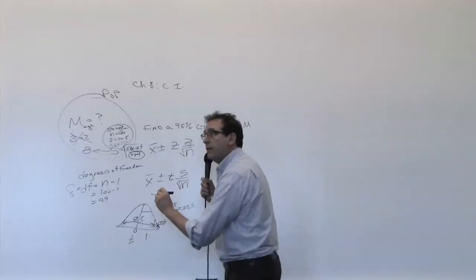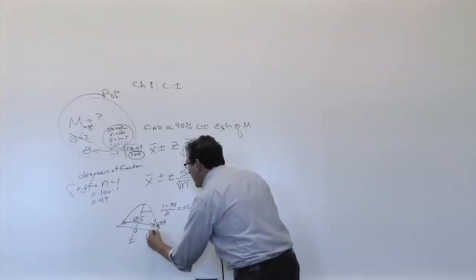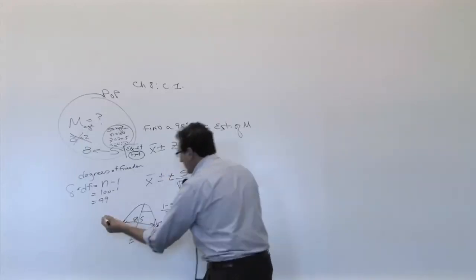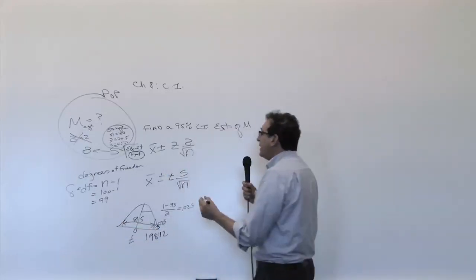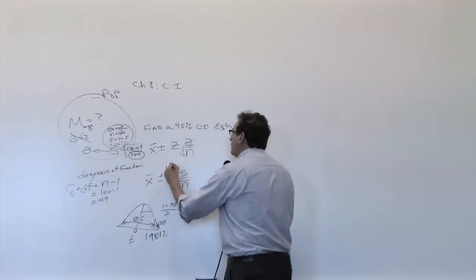1.9842, which means automatically you've got to put down 1.9842. So where does that go? Well, the 1.9842 goes right over here.